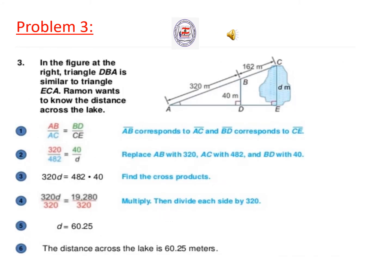Problem 3: In the figure at the right, triangle GBA is similar to triangle ECA. Ramon wants to know the distance across the lake. So AB corresponds to AC and BG corresponds to CE since the two triangles are similar.